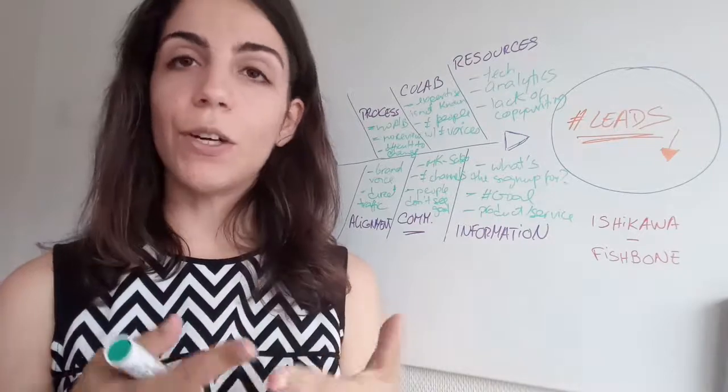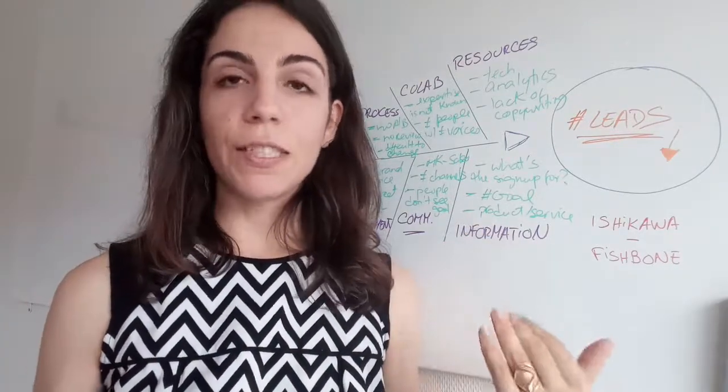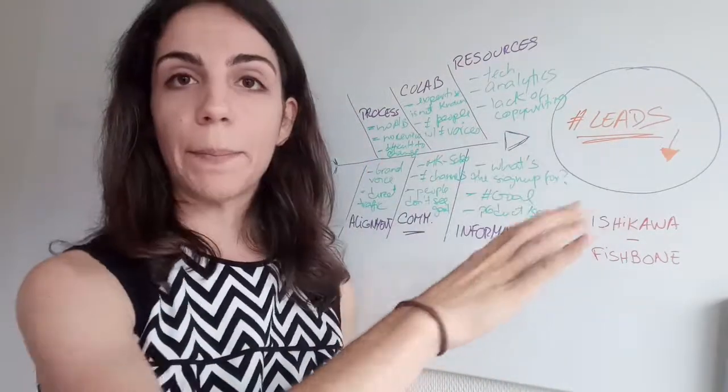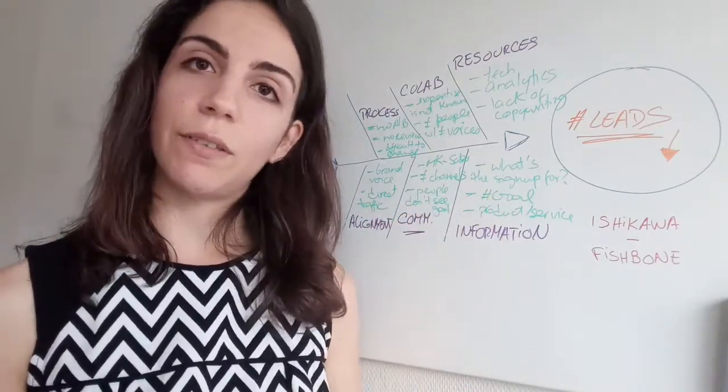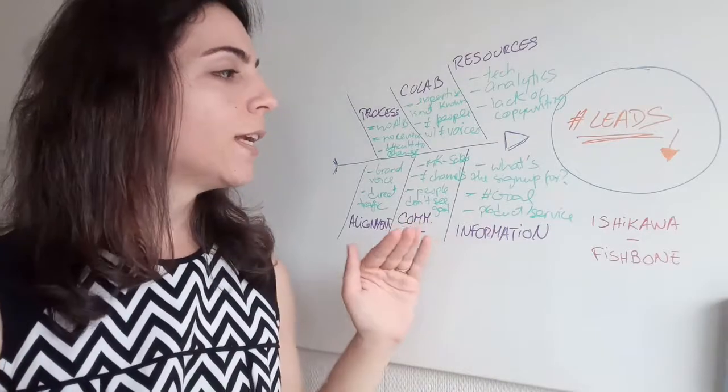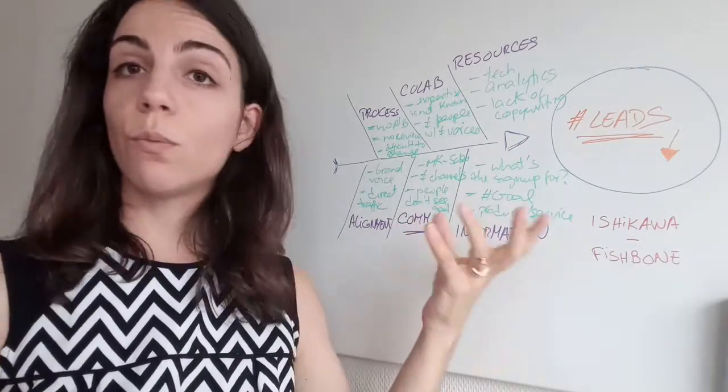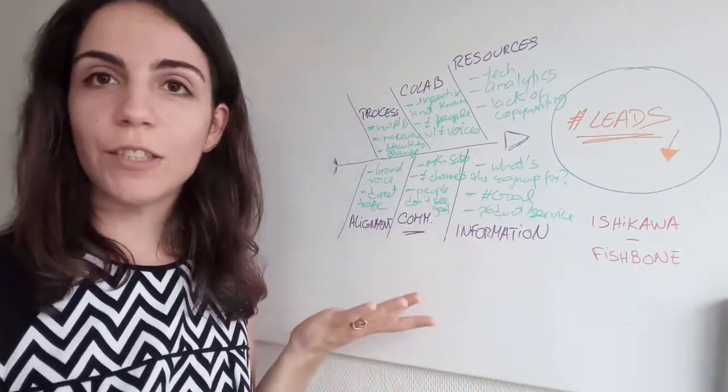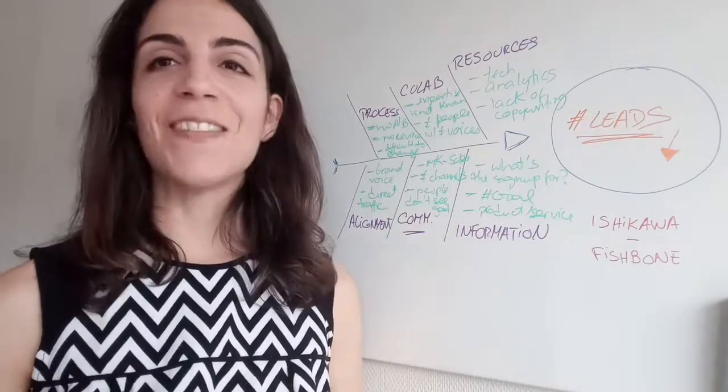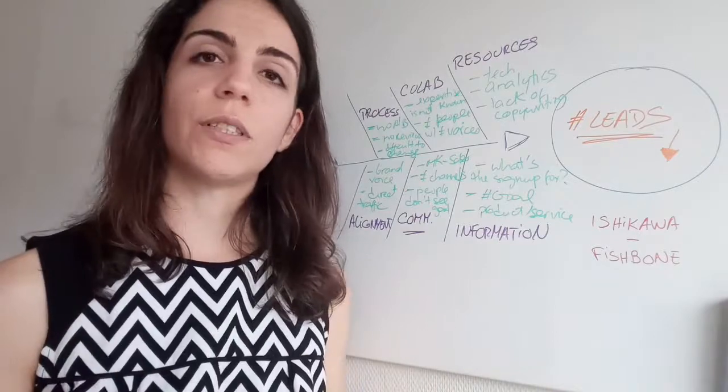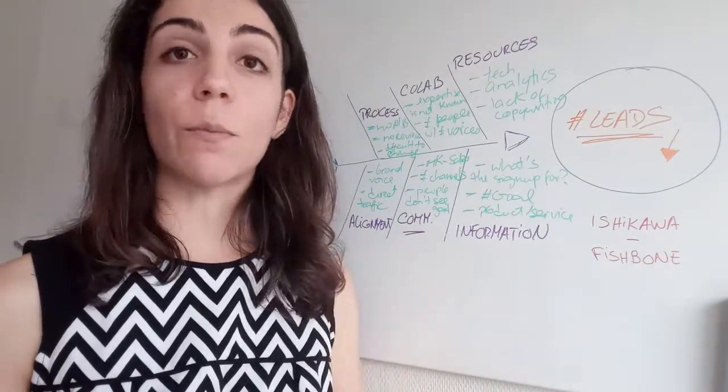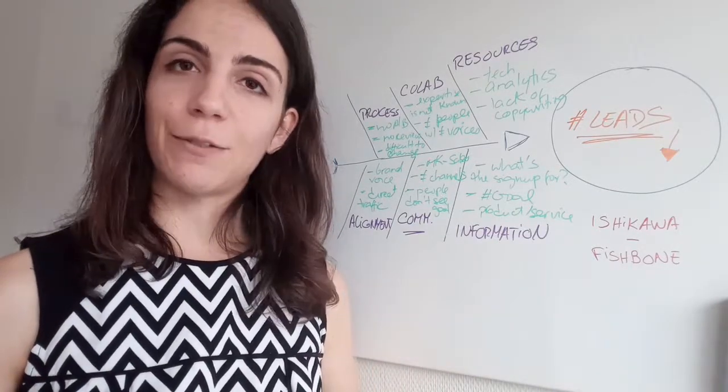Now, practically, how are you going to use this with your team? The first thing you're going to do is to download the template of the Ishikawa or Fishbone diagram, and I'm going to leave a link down below for you to do that. And if you also want to draw it with your team, you can also draw it, just like I did here. You don't have to use a specific template, but if you want, we're leaving a link down below for you to get a template for free.